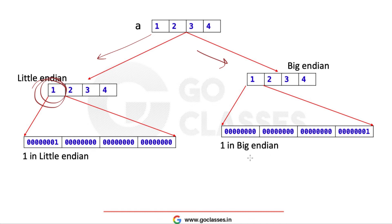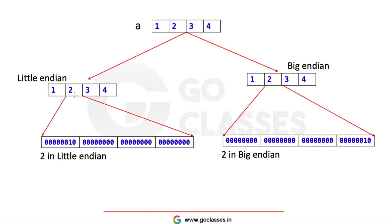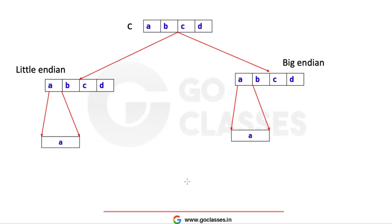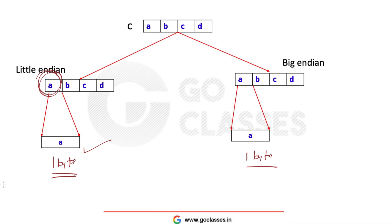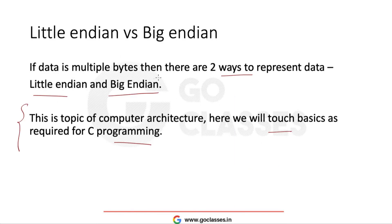If you zoom in on one element of an integer array, in little-endian it is stored in reverse, and in big-endian it is stored as the binary pattern. The array order itself is unchanged — but each multi-byte element internally follows its endianness rule. For a char array like {a, b, c, d}, if you zoom into 'a', both little-endian and big-endian store it the same way, because 'a' is just one byte — endianness only matters for multi-byte data.